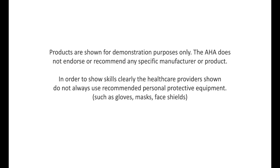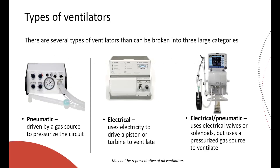First, we're going to go over the types of ventilators that you may see, broken down by what they can actually do. There's a pneumatic ventilator on the left-hand side — this is one powered by a gas source, either from a tank or a 50 psi wall outlet, and it cycles according to the pressure and pneumatics built within it. These are fairly simple devices, often used in disaster situations and on transport.